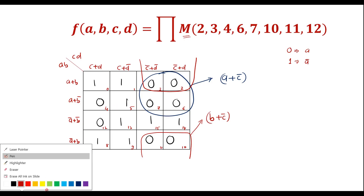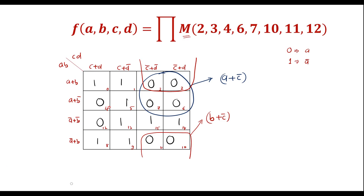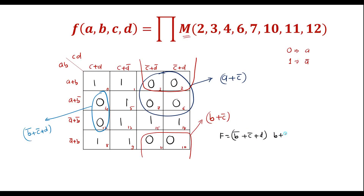We have 2 more zeros that form a pair. The value for this pair is: common factor is b bar, and here it is c plus d — giving b bar plus c plus d. Therefore, the final output boolean expression is: f equals (b bar plus c plus d) times (b plus c bar) times (a plus c bar).